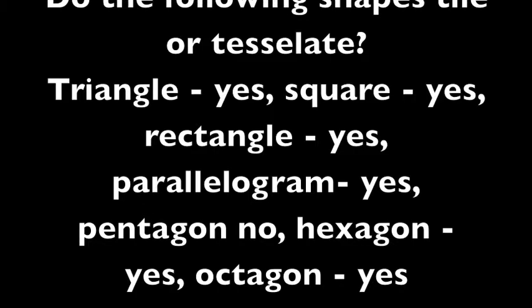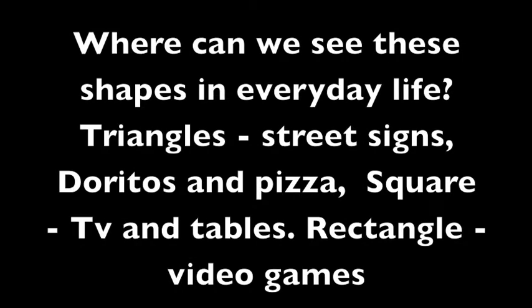Where can we see these shapes in everyday life? Triangles, you can see on street signs, Doritos and pizza. Squares on TVs, tables, and cheese. Rectangles on video game cases.